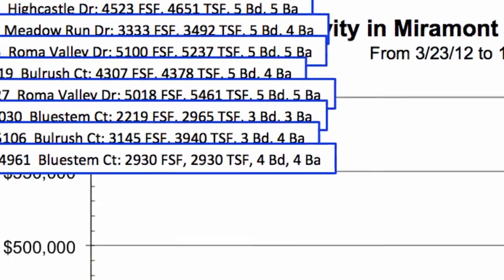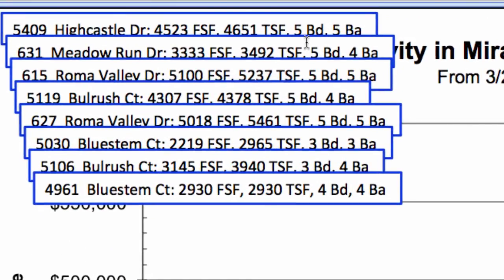So then we can look at our text boxes and find this property, which in this case is 631 Metal Run. That's the match. We can then move it down there closer to the data point. To move it, we need to select it and then move our cursor over the edge where we see our cursor change to four arrows.